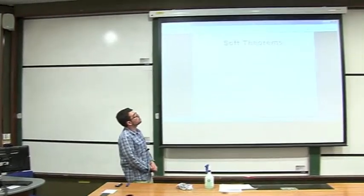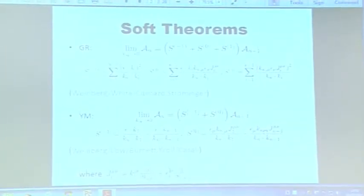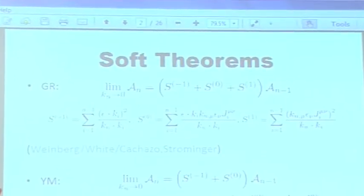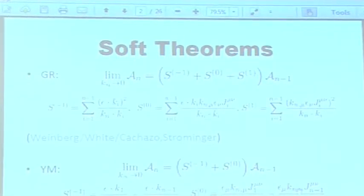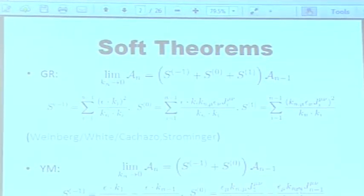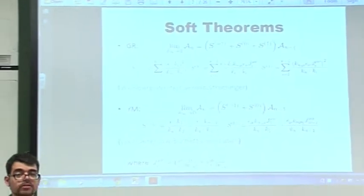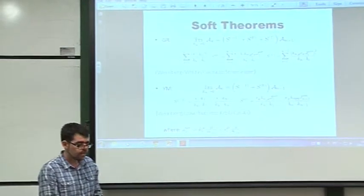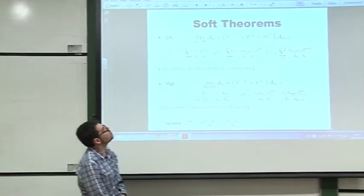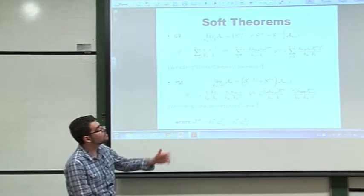Let me begin by defining what soft theorems are. The idea is to consider an N-point amplitude and then take the energy of one of the legs to go to zero. In the case of gravity, if leg N is a graviton and you take its energy to zero, what people have found over some decades is that you are left with an N minus one point amplitude times some prefactor, which is universal in the sense that its structure doesn't depend on the species of the other particles in the scattering amplitude. You can write out this universal prefactor as a Taylor expansion in powers of the soft momentum. The leading term was found by Weinberg in 1965, and since then various people have found a sub-leading correction and a sub-sub-leading correction.